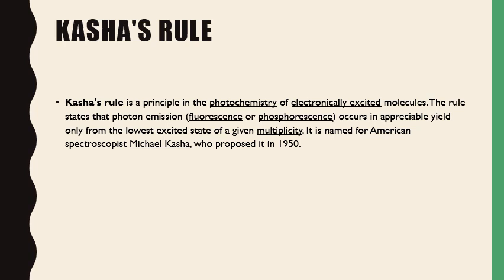To analyze fluorescence spectra we use a rule called Kasha's rule. Kasha's rule is a principle in the photochemistry of electronically excited molecules. This rule states that photon emission — meaning fluorescence — occurs in appreciable yield only from the lowest excited state of a given multiplicity. This rule was given by Kasha in 1950.